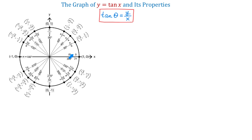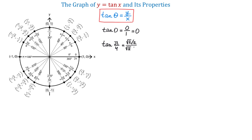For example, at 0, tangent of 0 is 0 divided by 1, which is 0. Now, let's pick another angle — pi over 4. This one will be easy to evaluate because square root of 2 over 2 divided by square root of 2 over 2 is 1. So, tangent of pi over 4 equals square root of 2 over 2 divided by square root of 2 over 2, and this equals 1.